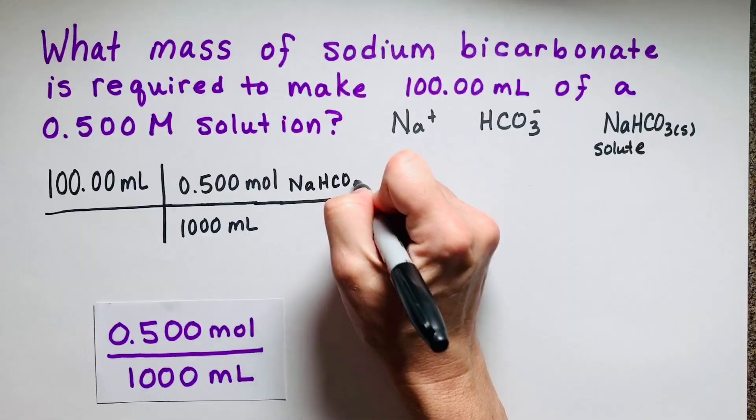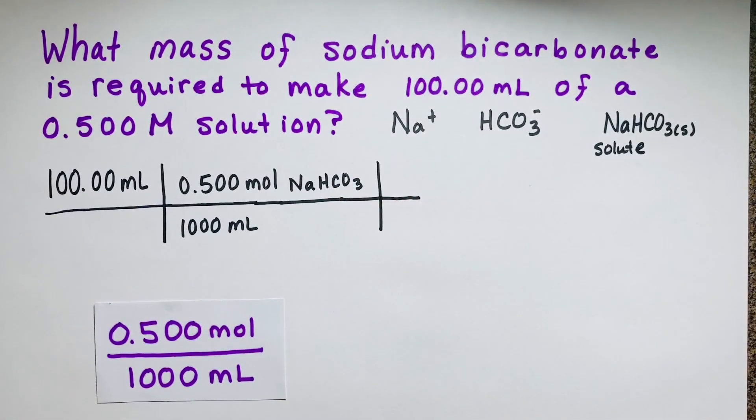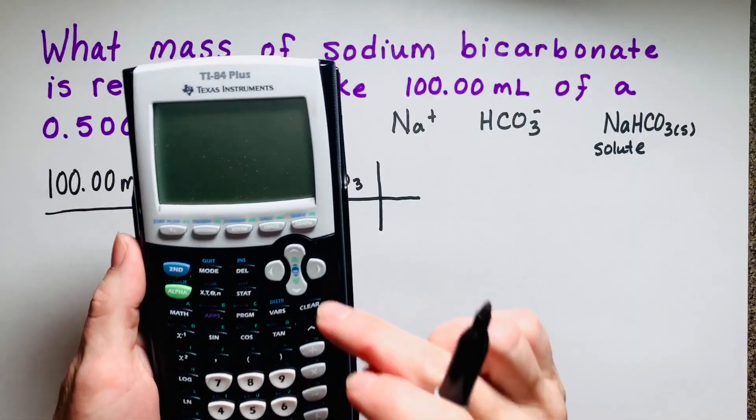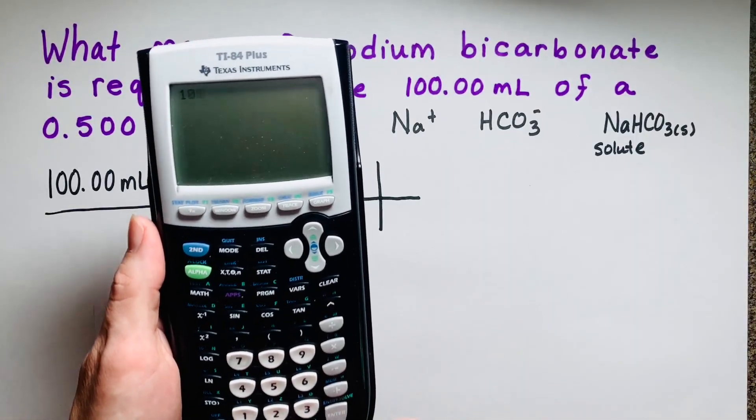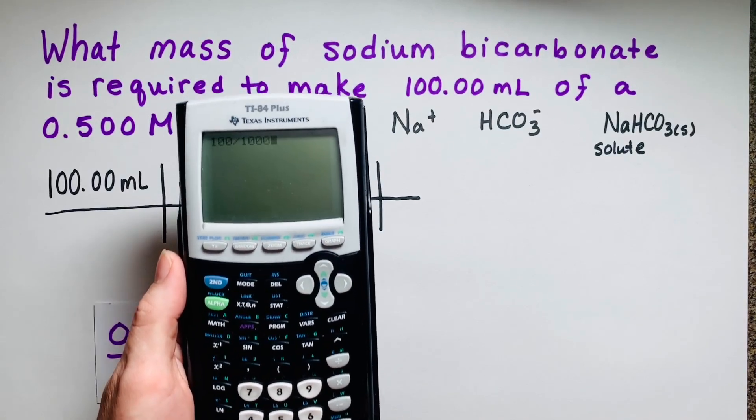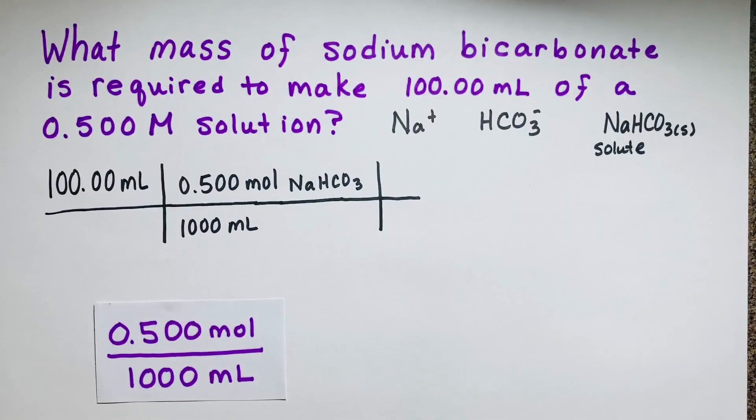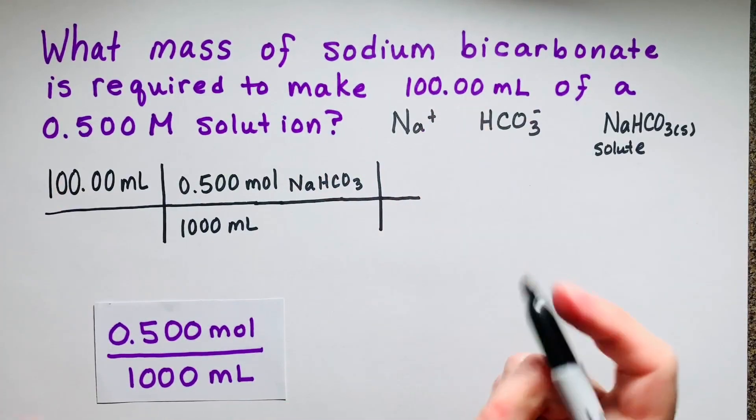So right now I'm just going to take a quick pit stop and say what mole amount am I actually having here. So 100 and then divide it by 1,000, and then times 0.5. I have 0.05 moles that I'm going to be putting into this volumetric flask.